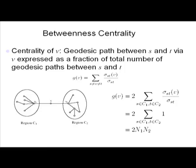g(V) is nothing but the sum over all pairs S and T, where neither S nor T is V, of the ratio sigma_ST(v) — the number of shortest paths that pass through V from S to T — divided by sigma_ST, the total number of shortest paths between S and T. Given this formula, if you compute the betweenness centrality of node V in the picture, you get 2*N1*N2, where N1 is the total number of nodes in region C1 and N2 in region C2.